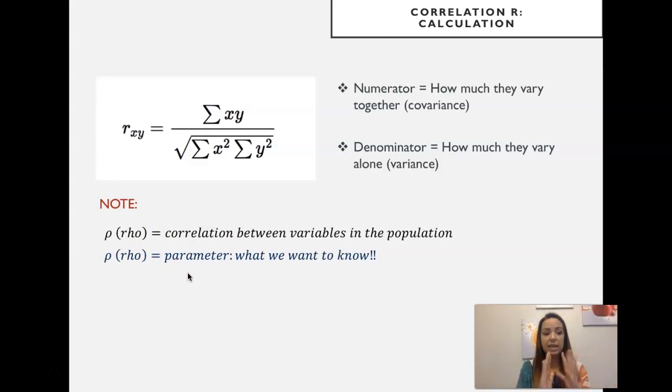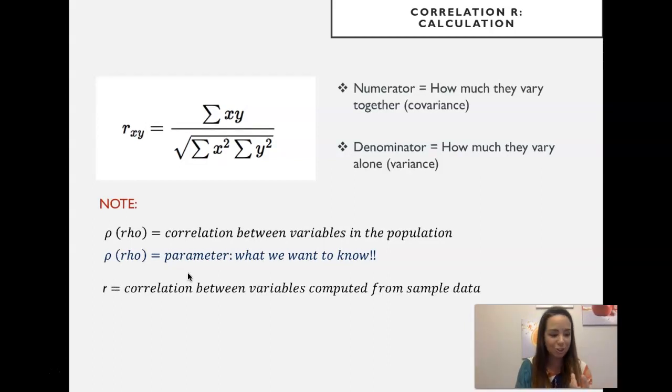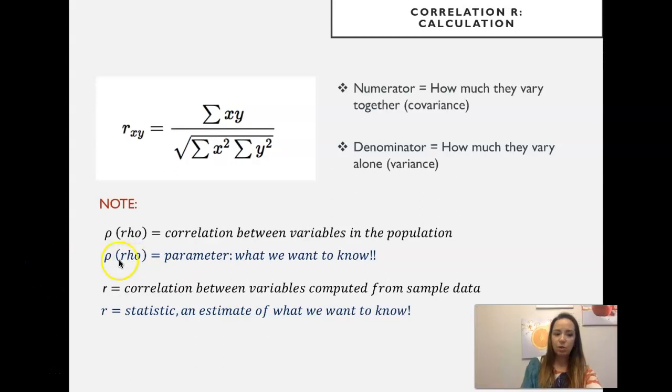As I said, because we can't have access to that, that's unknown, we do research. We get a sample. We look at sample data and we compute r, which is the correlation between variables in a sample, hopefully a representative sample of that population. So rho, this Greek thing that looks like P—I'm using rho not to confuse with the P of the probability under the null hypothesis—is our parameter. It's just like with the mean that mu is the parameter and x-bar is the sample statistic, the mean of the sample. Here is the same logic.